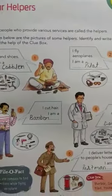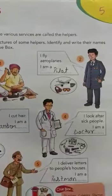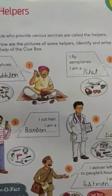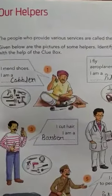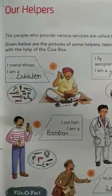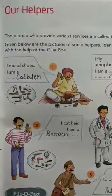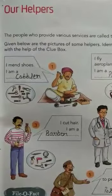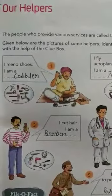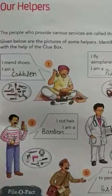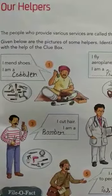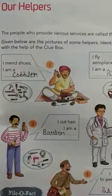Now exercise number 5 is: Our Helpers. In this exercise we will discuss about the helpers. There are pictures of helpers and a clue box for us. We identify the picture and write the name of the helper.